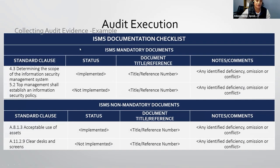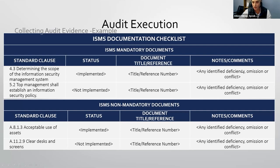Here is an example of an ISMS documentation checklist: mandatory documents are listed with standard clause references on the left side, and on the right side you record the status of each document — whether it is present, its title, reference, notes, and comments.